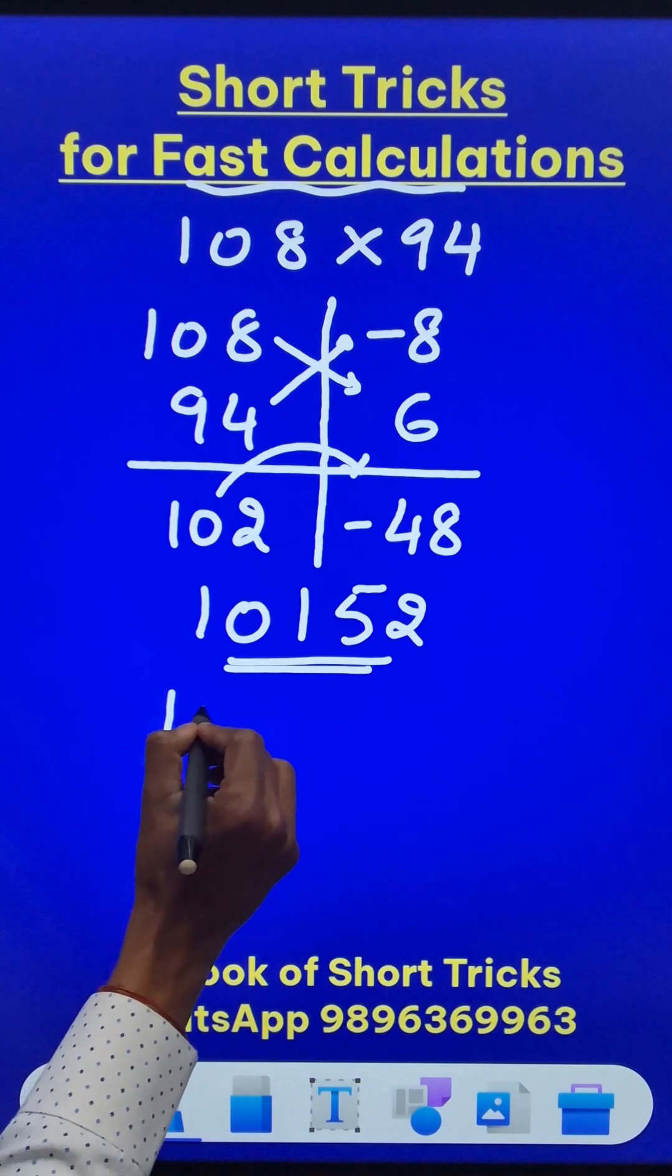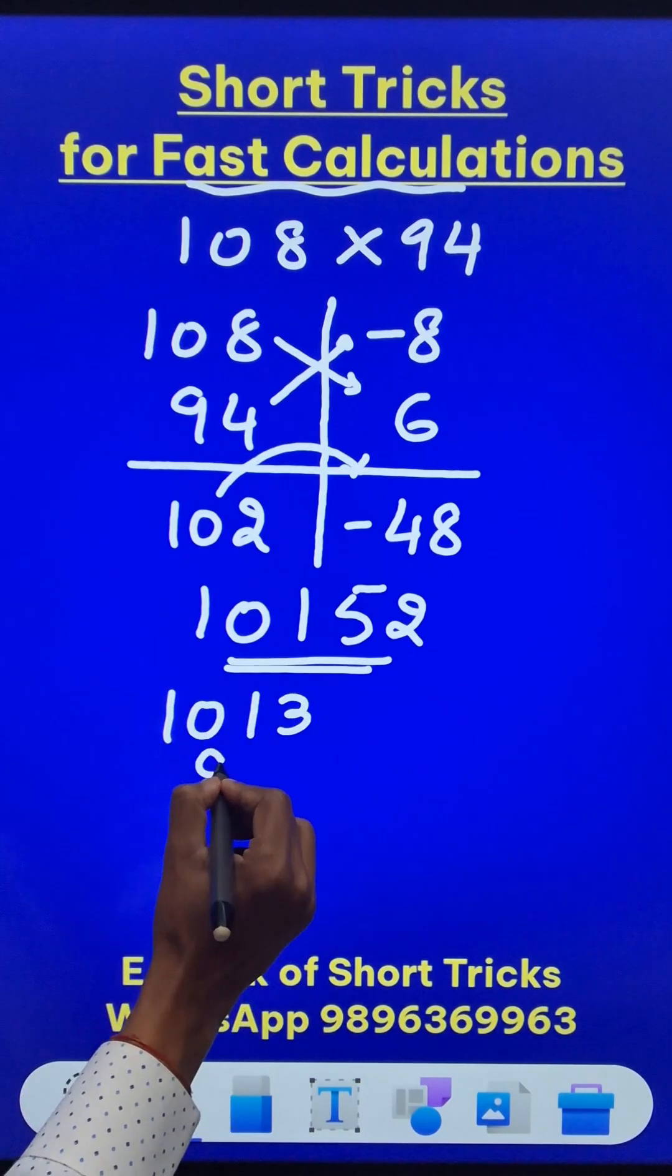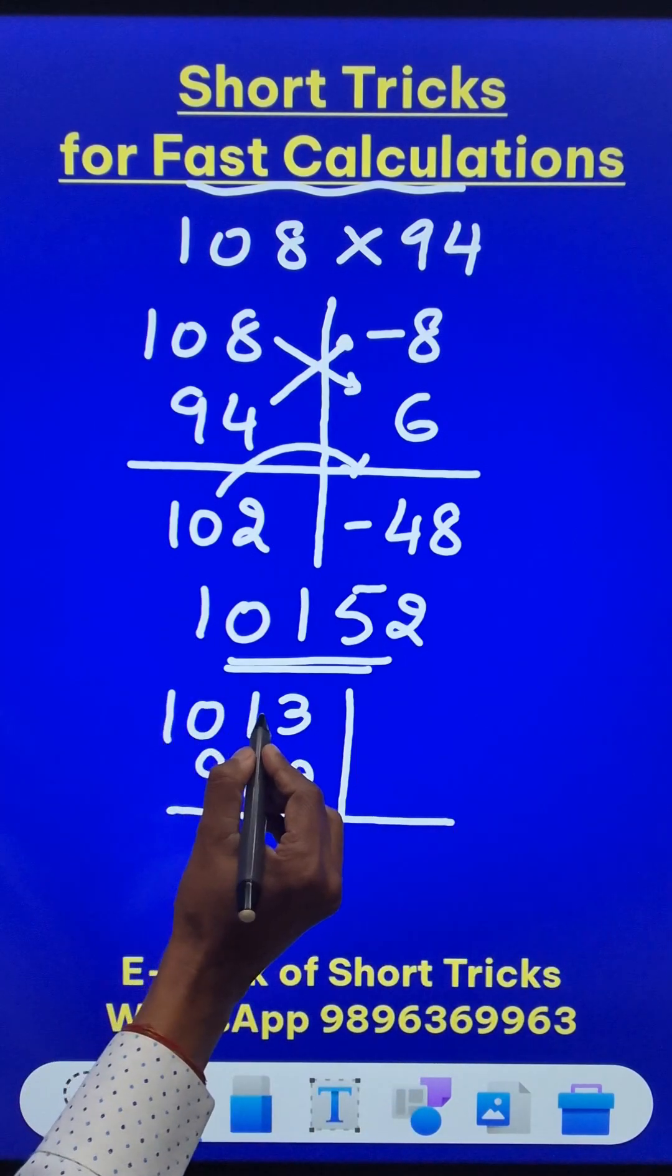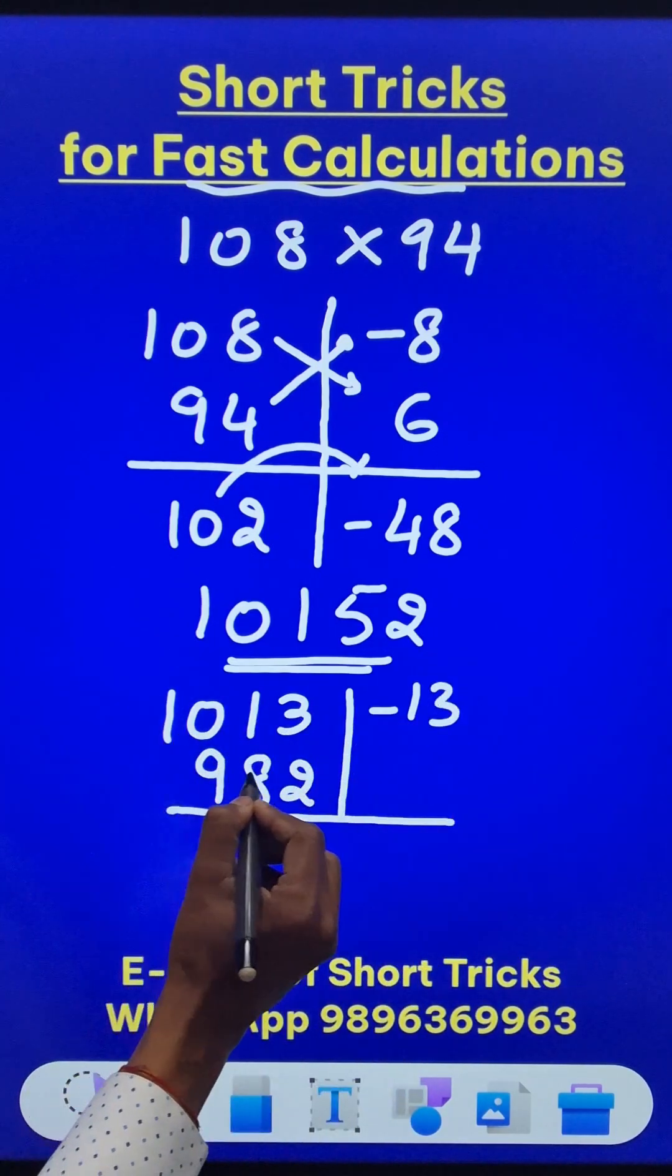Let's do it for numbers close to 1000. 1013 times 982. Now let's see 1000 minus this is negative 13 and 1000 minus this is 18.